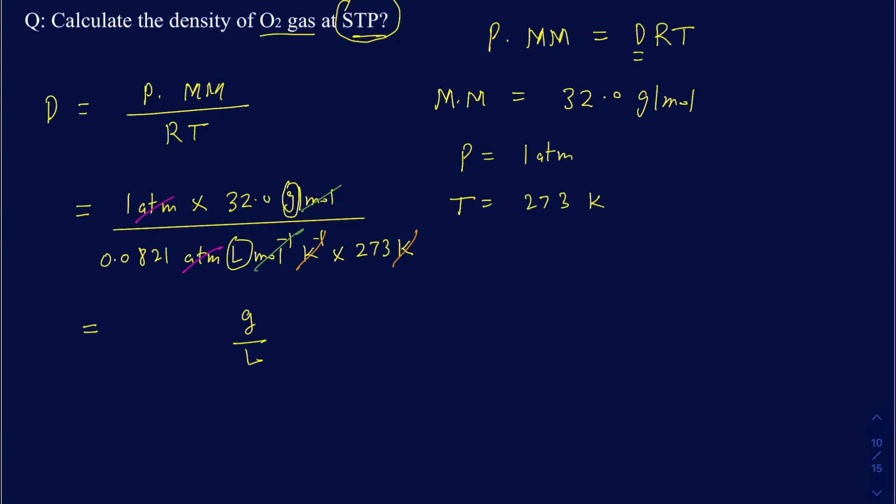It comes out to be 1.43 grams per liter. That's going to be the density for the oxygen gas at STP. This is measured in liters, so don't take that as grams per milliliters, because if you take that as grams per milliliters, then the density comes out to be bigger than the density of water, which is not the case here. The density of gases is much less than the density of solids and liquids.